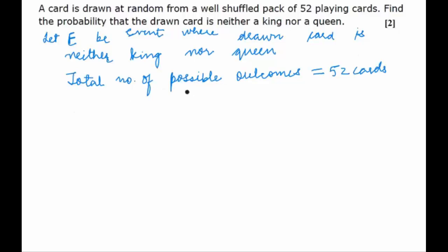The total number of kings and queens: kings are total 4, one per suit, and even queens are 4, one per suit. So total 4 plus 4, that's 8.